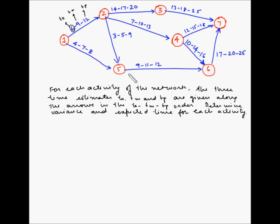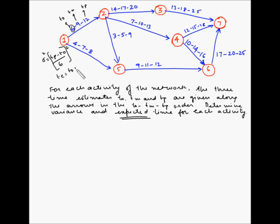We are being asked to determine the variance and the expected time for each activity. Variance is the square of the standard deviation, and standard deviation is (tp minus to) divided by 6, so variance is that quantity squared. The expected time te is (to plus 4 times tm plus tp) divided by 6. Let's calculate these values for each activity and make a table.